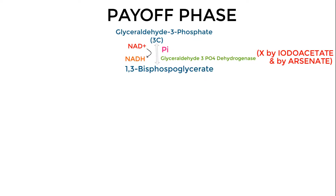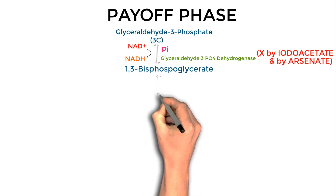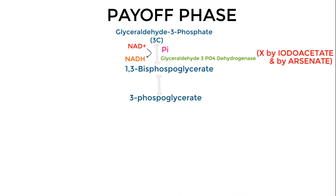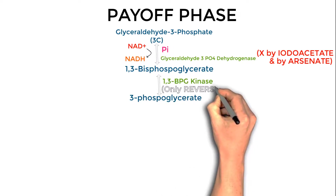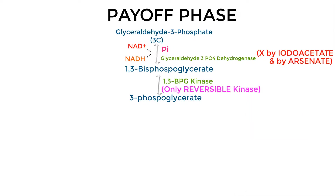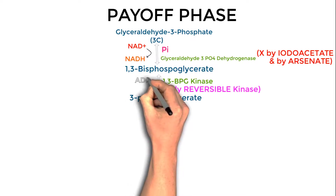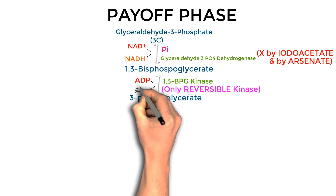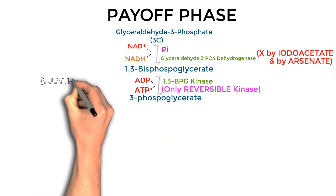Step 7: 1,3-bisphosphoglycerate is converted into 3-phosphoglycerate with removal of a phosphate group, under the enzyme 1,3-bisphosphoglycerate kinase — the only reversible kinase in glycolysis, unlike hexokinase/glucokinase and PFK which are irreversible. In this step ADP is converted to ATP — this is substrate-level phosphorylation.